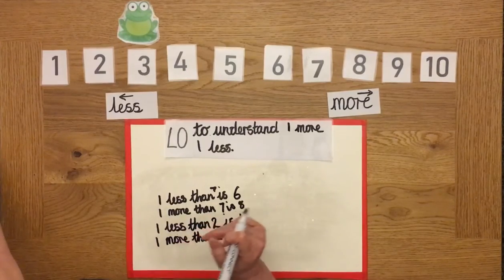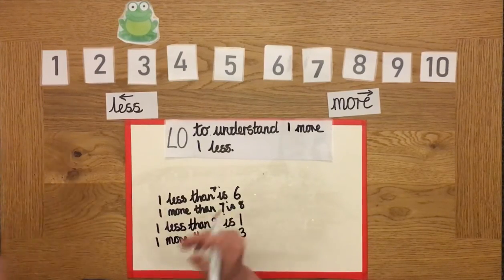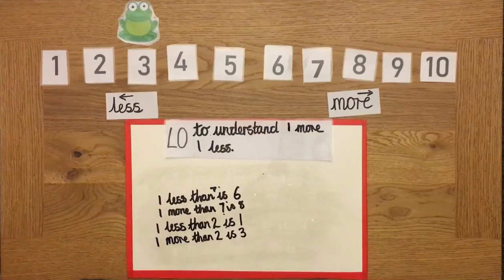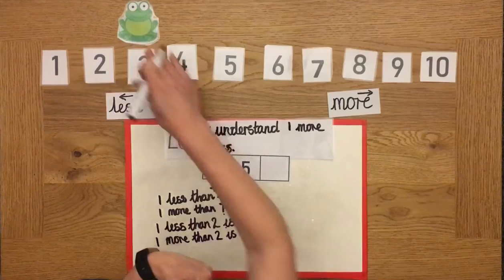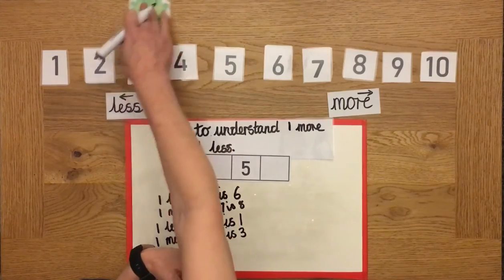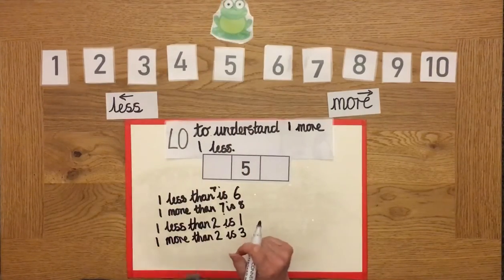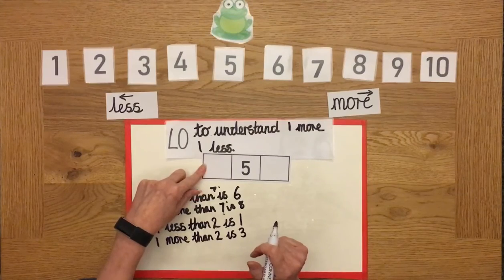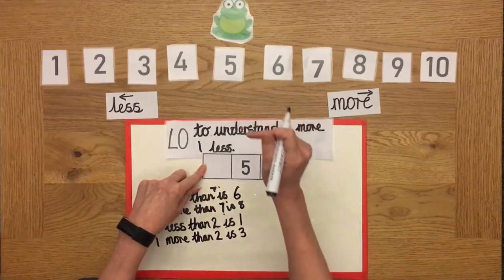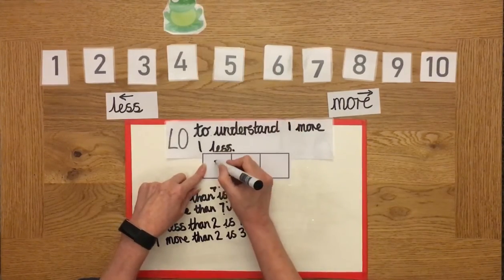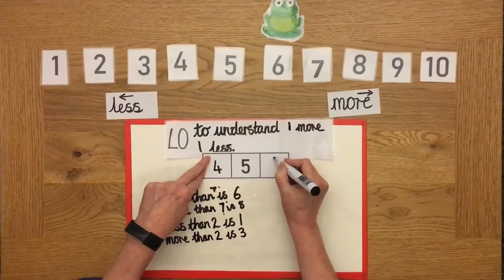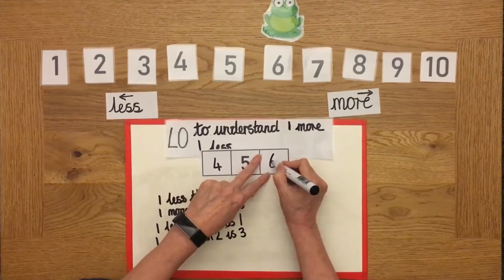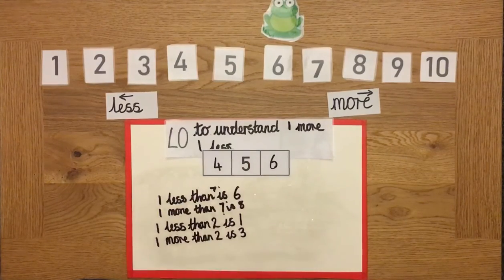Okay. Starting at number five. Well done. We're going to go one less is four. Going back to five. One more is six. Brilliant. Excellent job.